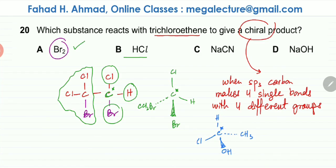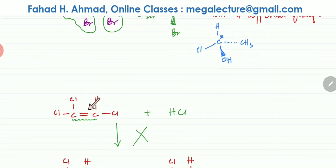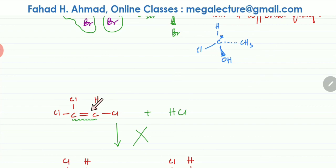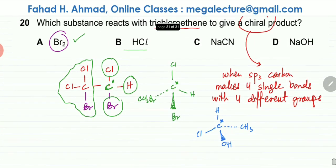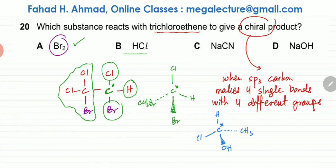Checking NaCN and NaOH: these two do not have an addition reaction with trichloroethene. Without an addition reaction, the double bond does not break — instead, a Cl would get displaced. Since the double bond remains, no chiral product is possible, because you need four single bonds for a chiral carbon atom. So the correct option is A — bromine — which gives a chiral carbon atom.